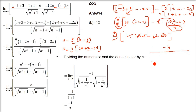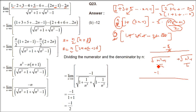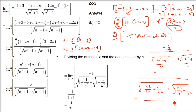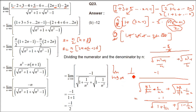Only numerator we have seen. The denominator is √(n² + 1) plus √(n² + 1). Now divide numerator and denominator by n. When n goes inside the root it becomes n². So numerator becomes minus 1. Denominator becomes √(1 plus 1/n²) plus √(1 minus 1/n²). Now limit n tends to infinity: 1/n² goes to 0. So we get minus 1 divided by (√1 plus √1) equals minus 1 divided by 2. So minus 1 by 2 is the answer.